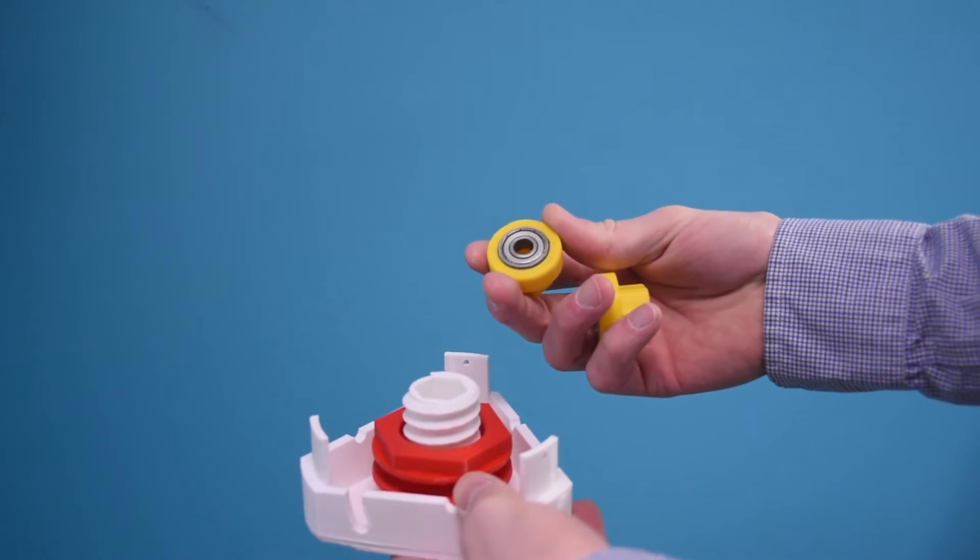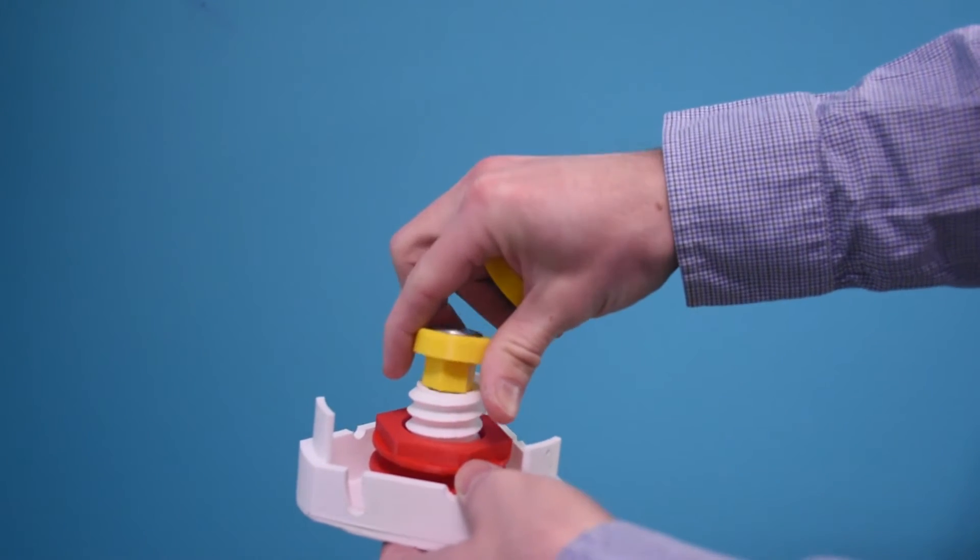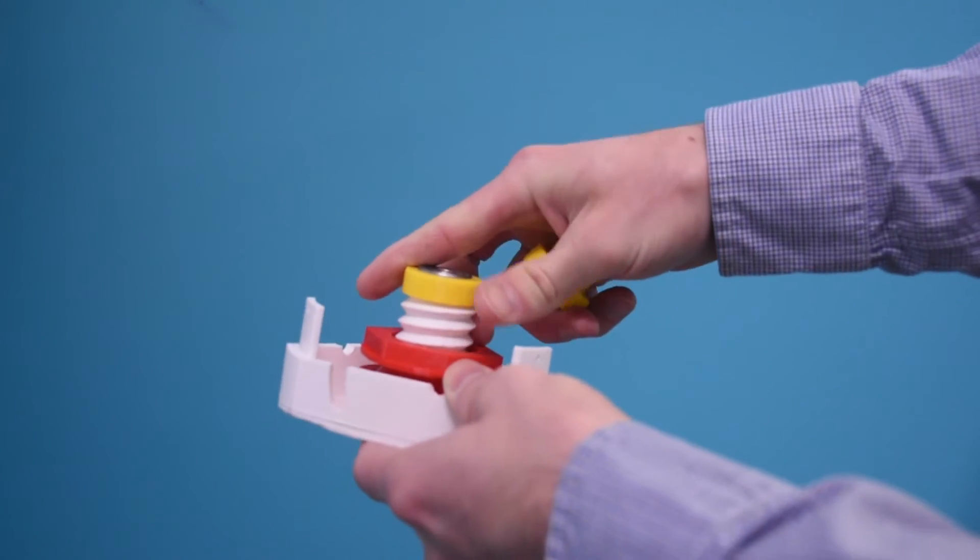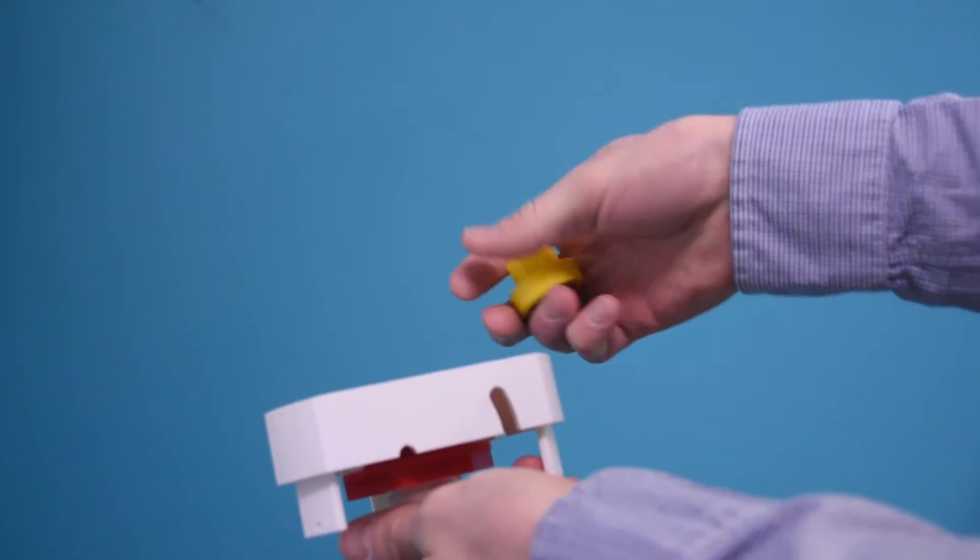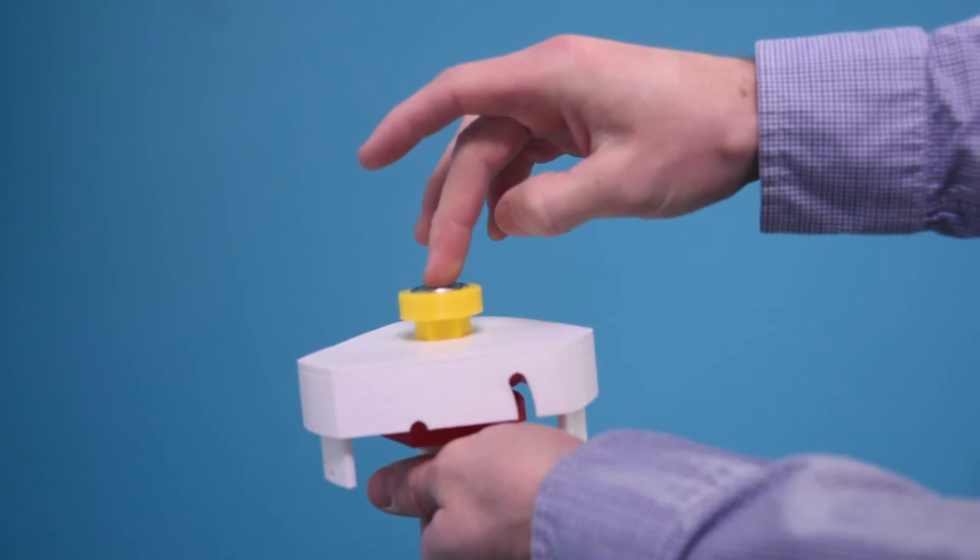For demonstration and testing, I printed these yellow shaft adapters and inserted a couple of 608 skate bearings. By using these yellow adapters, I can easily configure this windmill to mount to any shaft without having to reprint the entire hub.